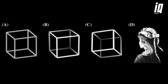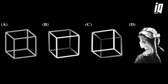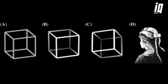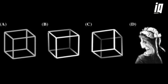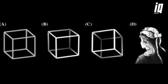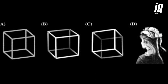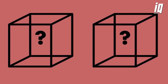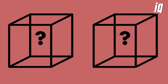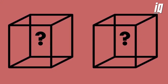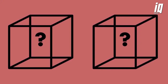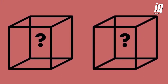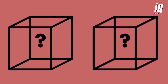Our brains are constantly interpreting the visual information from our eyes. But when an image is ambiguous, like in the Necker cube illusion, our brains can't rely on just one perspective. This leads to a phenomenon known as multi-stable perception, where our brains alternate between different interpretations of the same image.